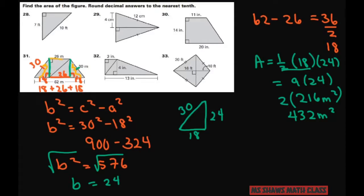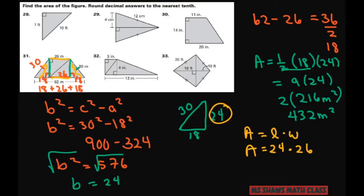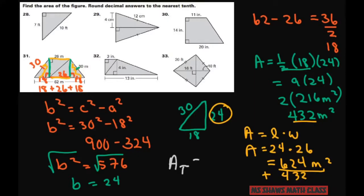Now I need to find the area of the rectangle. Area equals length times width, so that's 24 times 26, which equals 624. Adding the two areas together: 432 plus 624 gives a total area of 1056 square meters.